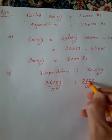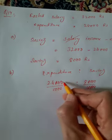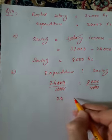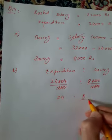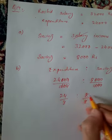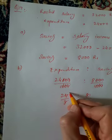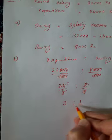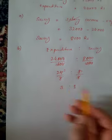24,000 divided by 8,000 simplifies to 24 divided by 8, which equals 3 divided by 1.